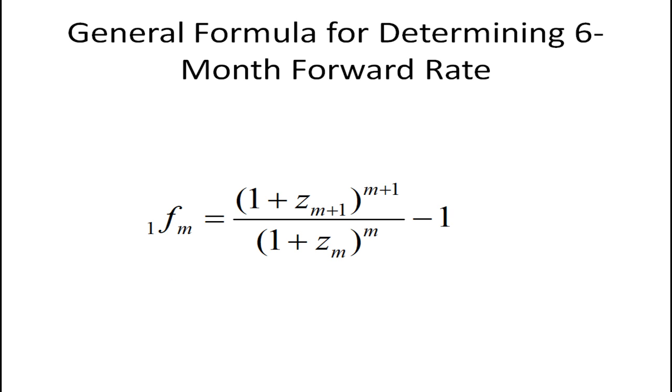The general formula for determining a six month forward rate would be the following. So if we want a six month rate that's what the one is here for. One period. But starting in period M it would be one plus the six month rate in period M plus one raised to the M plus one power. Divided by one plus the rate in period M raised to the Mth power and subtracting one.